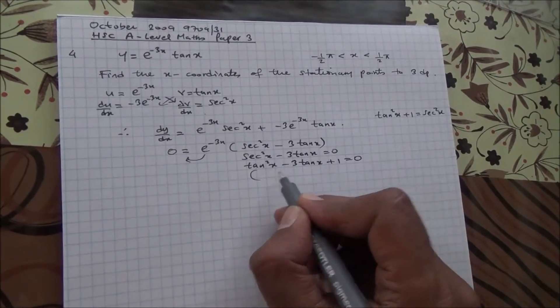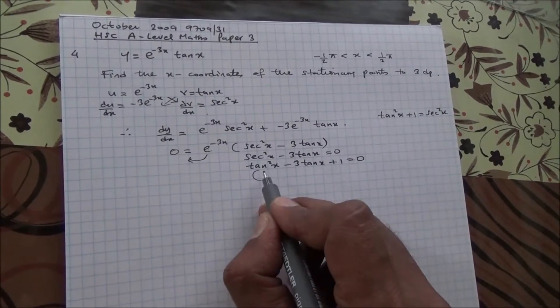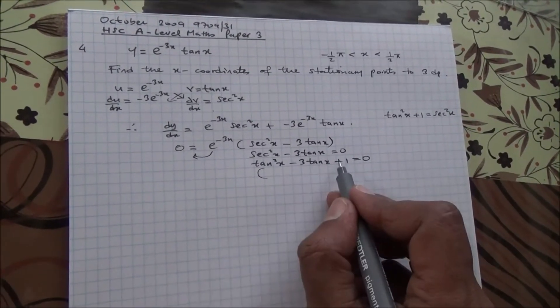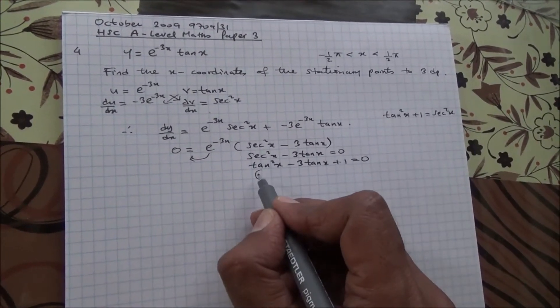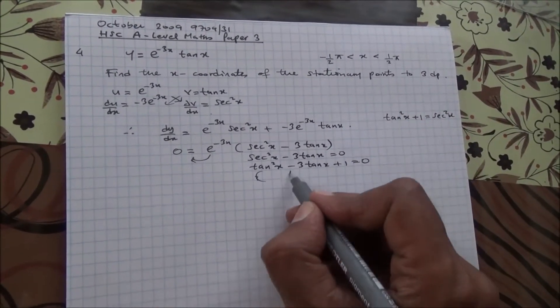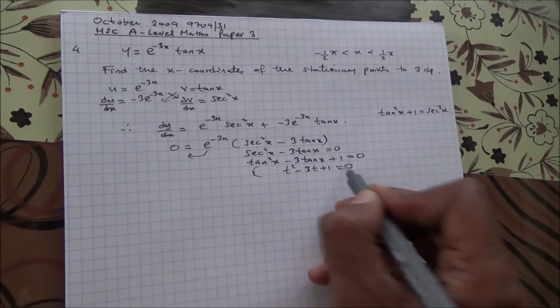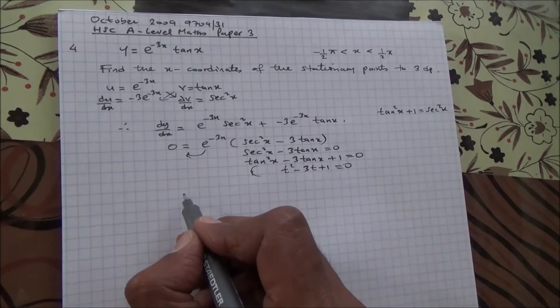So, do we have a factor? No, we can't factor. We need to give the answer to three decimal places. That's a key point here. So, maybe we can say t squared minus 3t plus one is equal to zero and use the formula for quadratic equation.